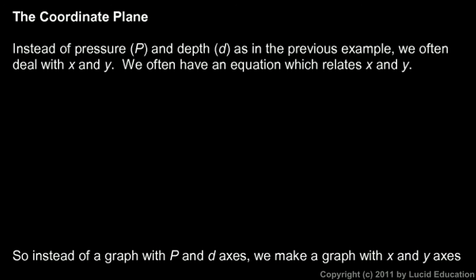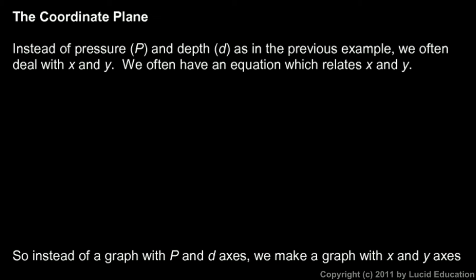We don't always have p and d. What's much more common is to have two variables and simply call them x and y. So we often have an equation which relates x and y. For example, you can write this in your notes. Let's just do a real simple equation: y equals 3x.